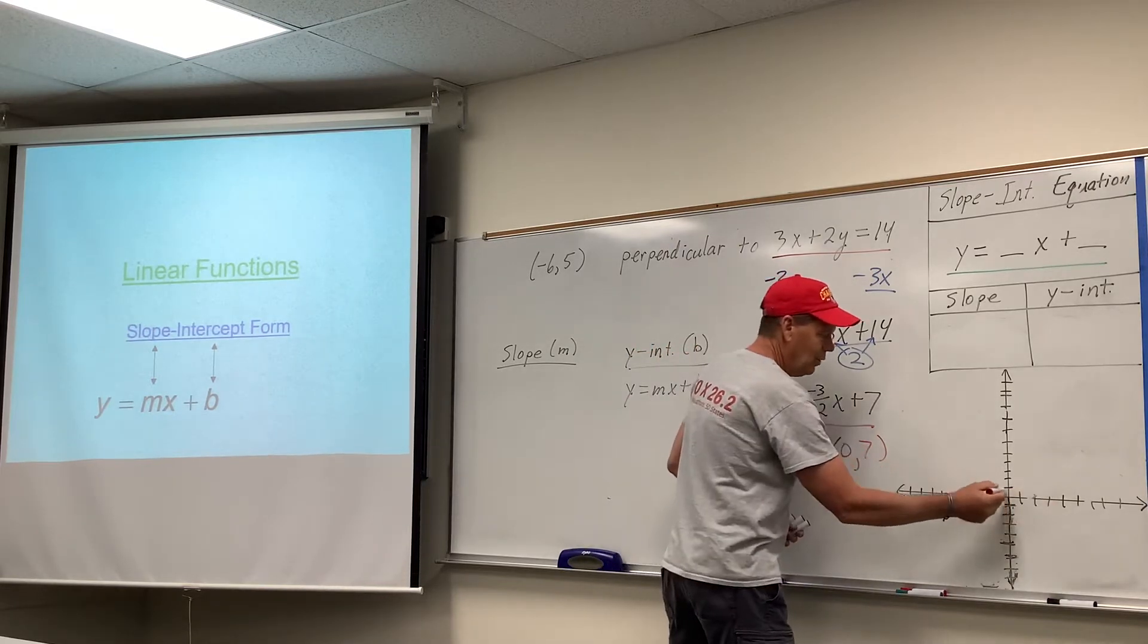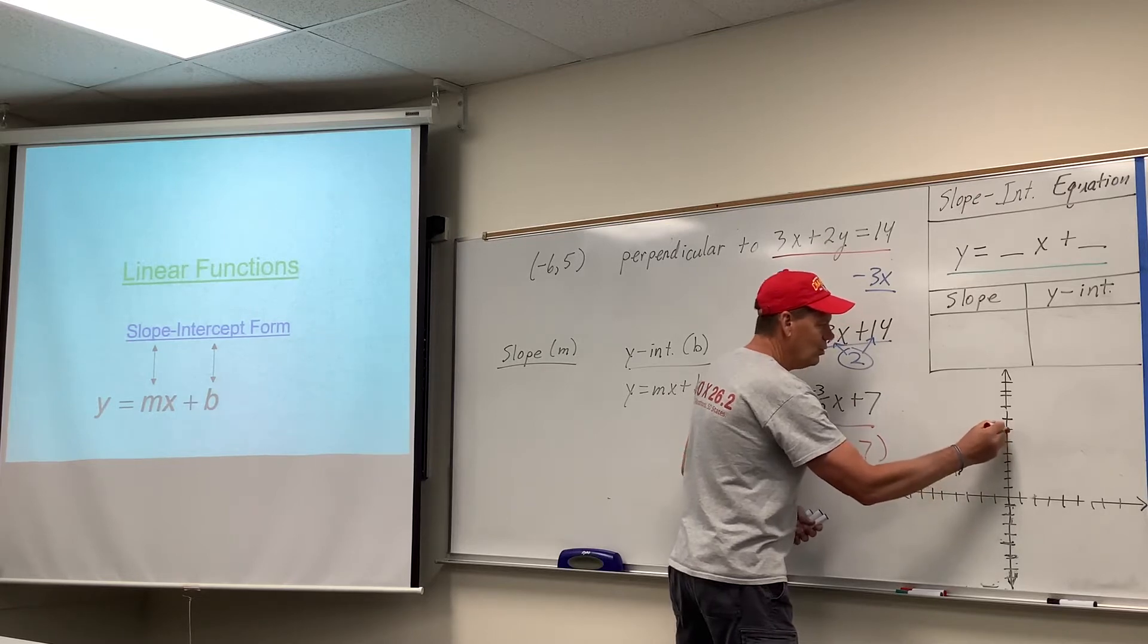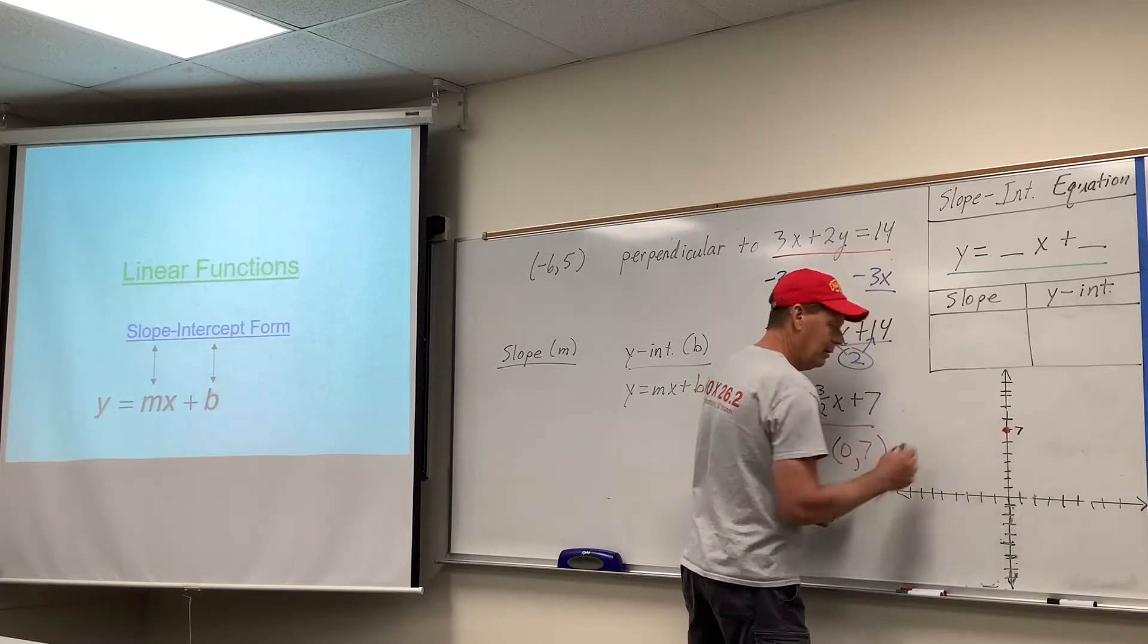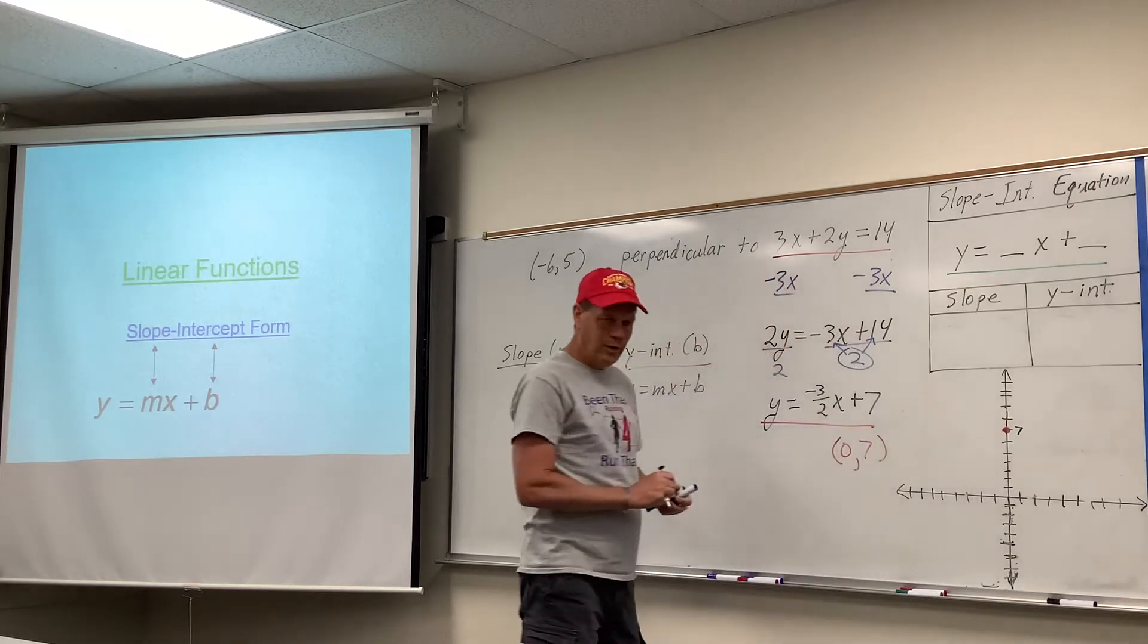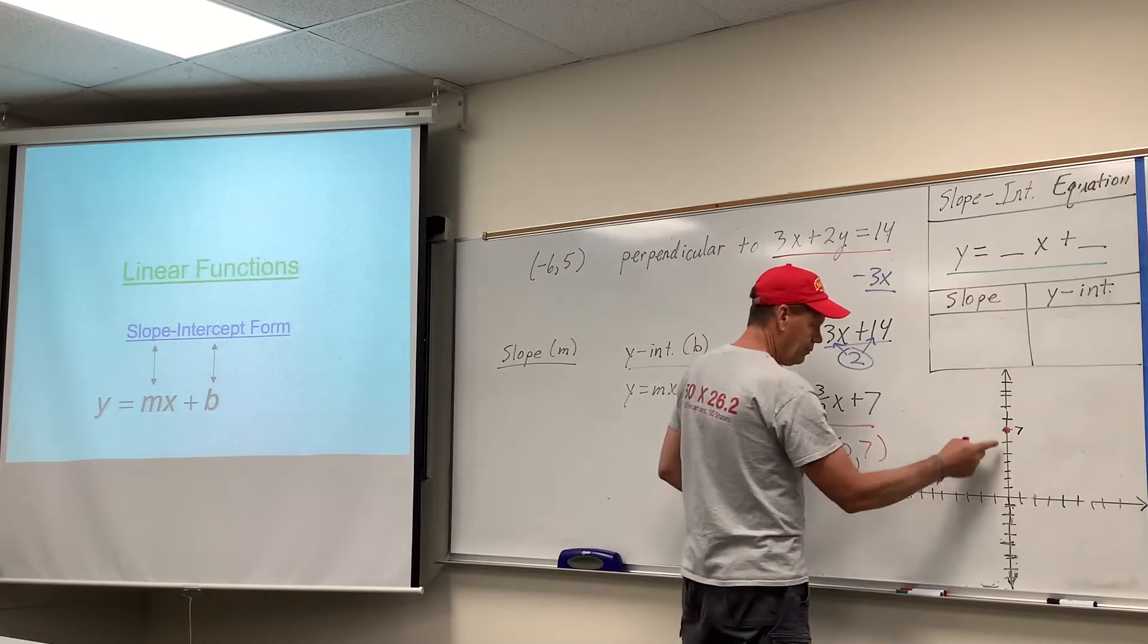And 0, 7, is 0, 1, 2, 3, 4, 5, 6, 7. And again, I would ask you, when you graph these on your homework, to plot, to graph both lines when there's questions of this type. So 0, 7 is there.